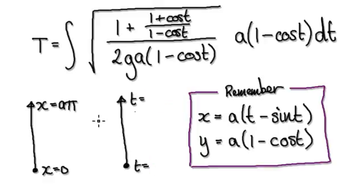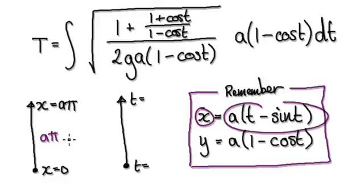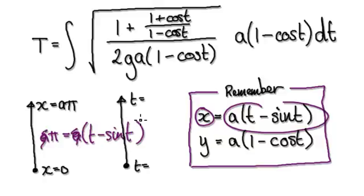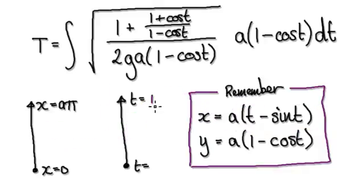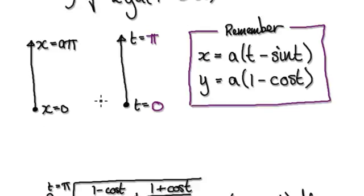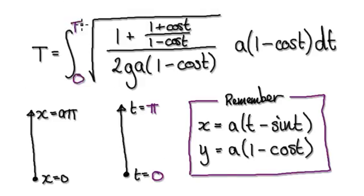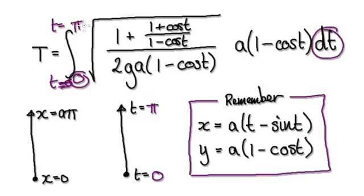Now we need to figure out the upper limit. In the x realm, the upper limit is a·pi. So x equals a·pi equals a(t minus sin t). Dividing both sides by a gives pi equals t minus sin t. When t equals pi, then x will be a·pi. So we are integrating from t equals zero to t equals pi.